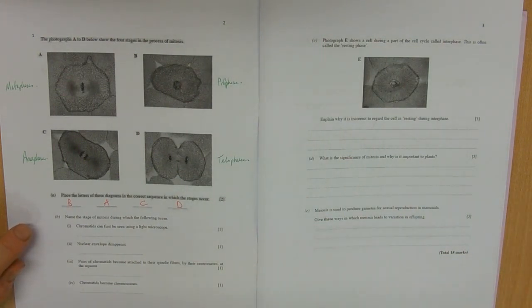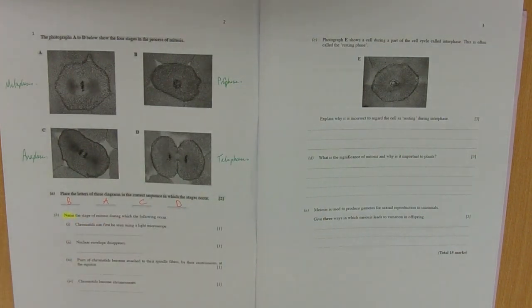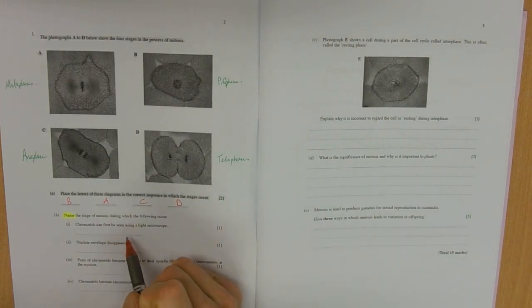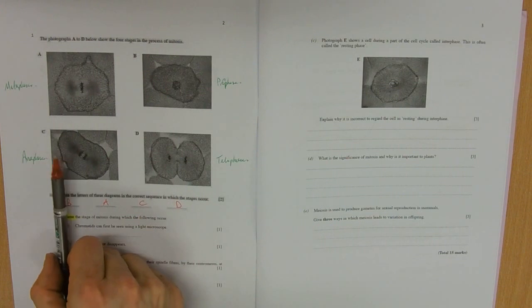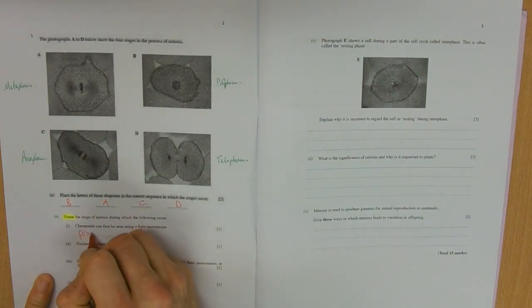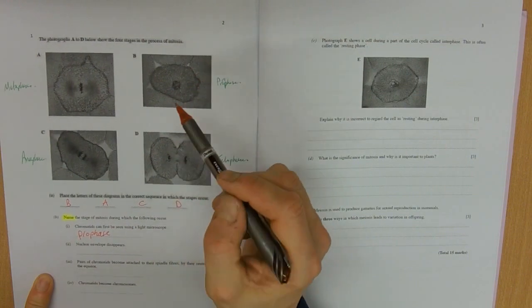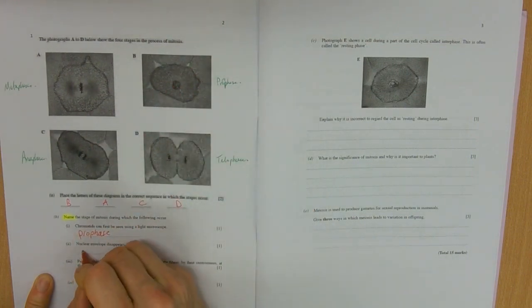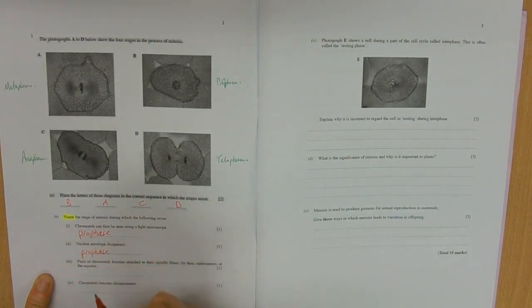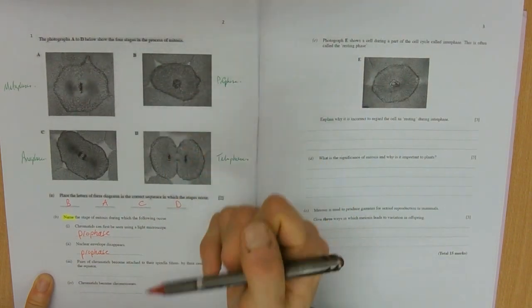So name the stage, the problem here says name the stage, so give it its name, not its letter. Chromatids can first be seen using a light microscope. So our first stage was B or prophase. Can we see chromatids using a light microscope? Yes, so that's our answer there. The nuclear envelope disappears. Well, can we see the nuclear envelope? No, so it's disappeared and that's part of prophase as well. So these are just what you've learned from your notes.